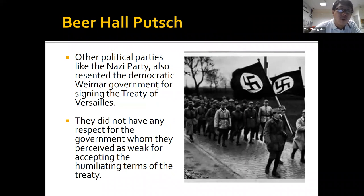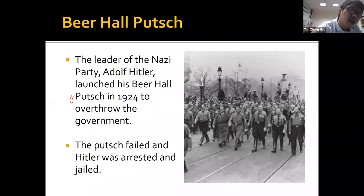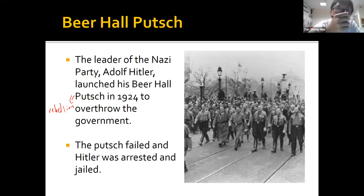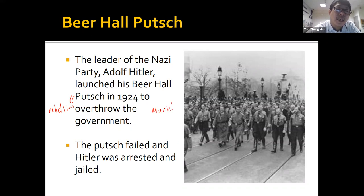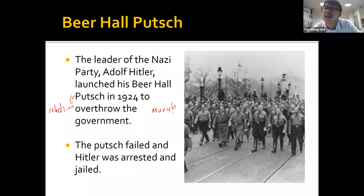The story goes that Hitler was in a Beer Hall — basically a pub — in Munich. He gathered many of the leaders of Munich's government to this Beer Hall. He sent his private army, later called the SA, to surround the Beer Hall and try to arrest the government leaders of Munich and force them to give up power to the Nazis. However, he failed and Hitler was arrested and jailed, because overthrowing a city is not as easy as it sounds.